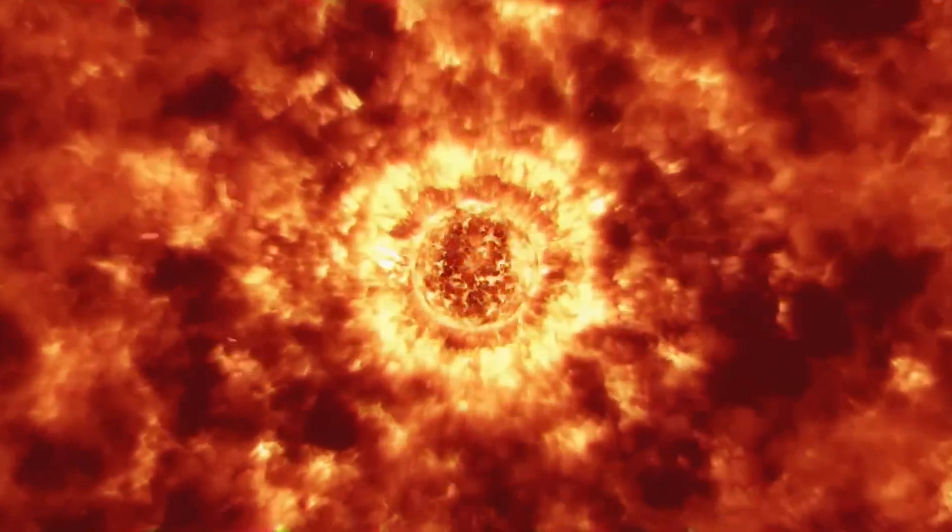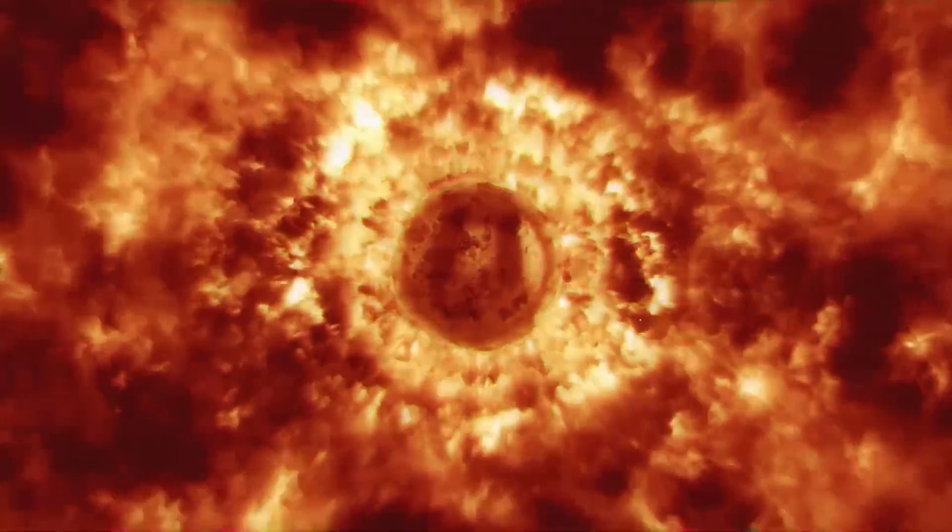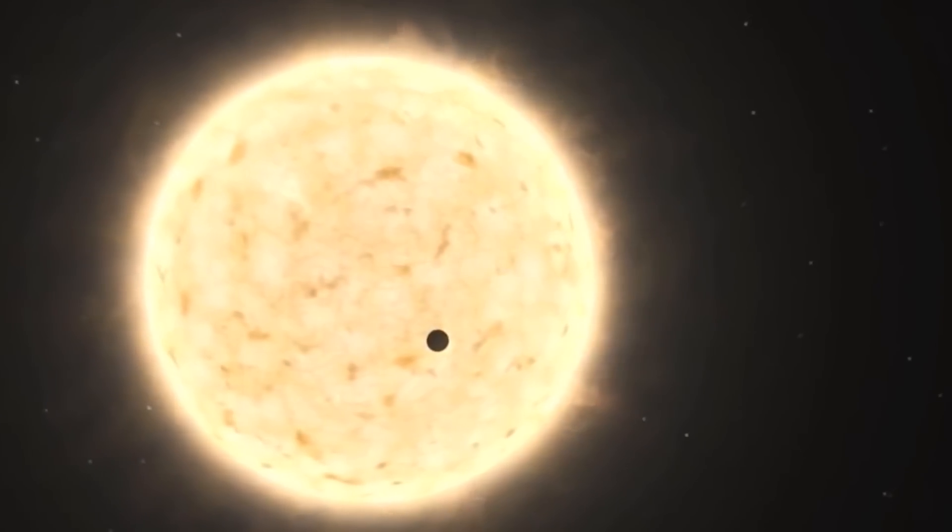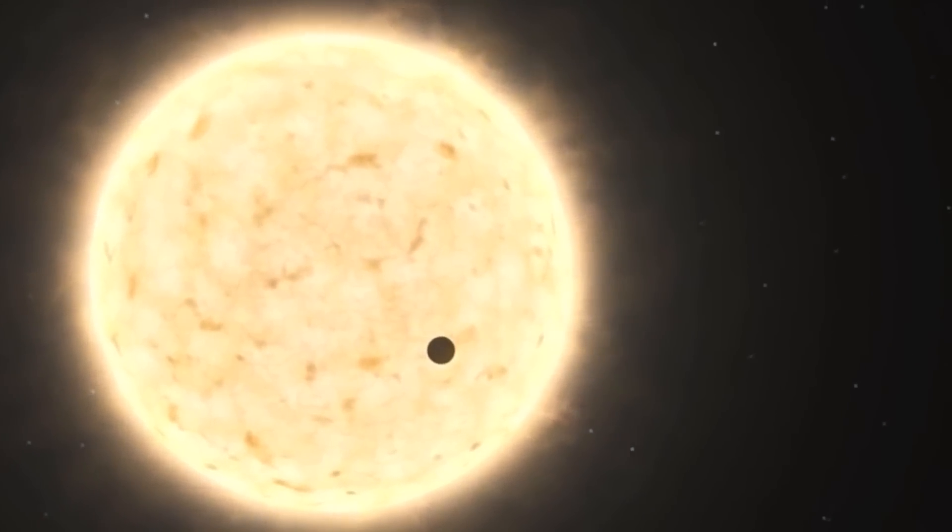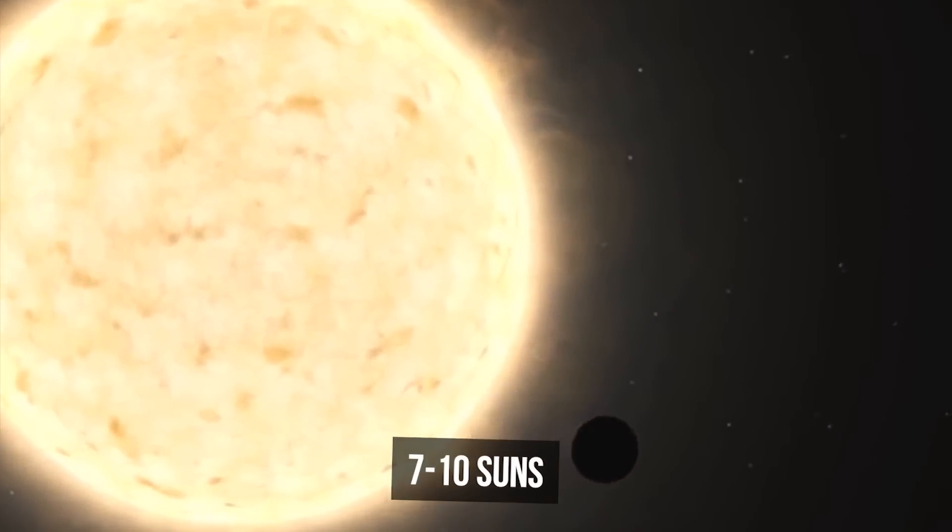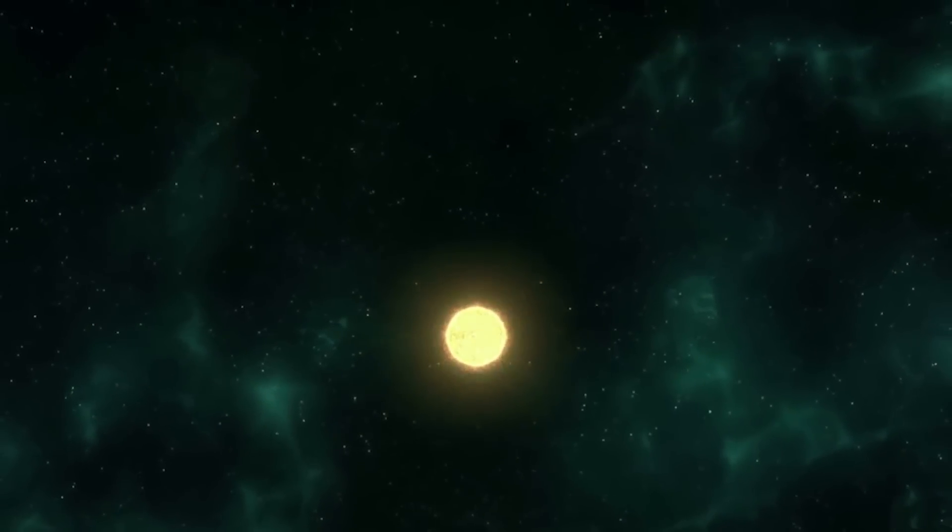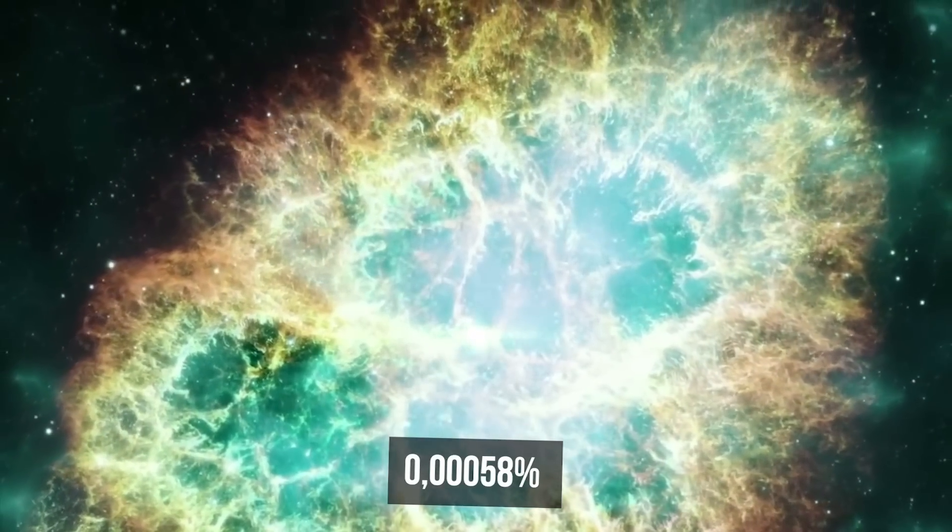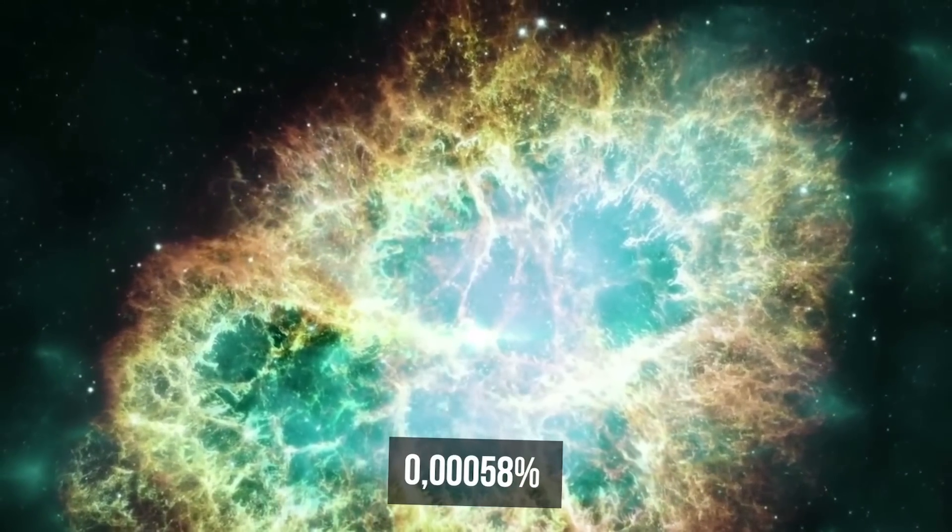But why did UY Scuti lose the race so quickly and easily? The point is that its incredible size dramatically reduces the star's density, so it masses no more than 7 or 10 of our suns. And that's a real problem. Its gravity is too weak to keep the star's outer envelope in its place. That's why UY Scuti loses 0.5800 of a percent of a solar mass every year.